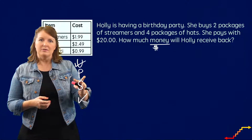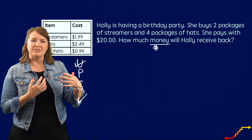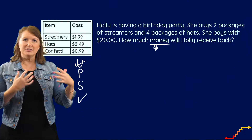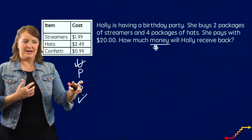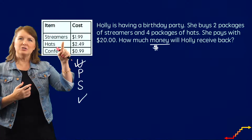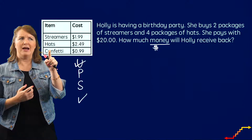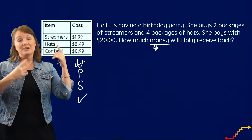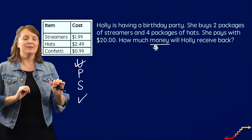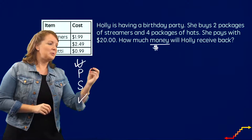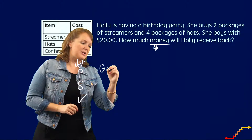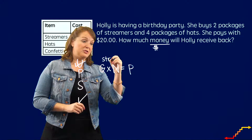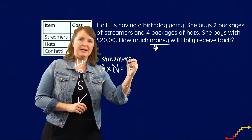Now I'm going to make a plan. A plan should always be based on the schema. Holly buys two packages of streamers and four packages of hats, so I'm going to use the equal groups schema — I'm going to use it twice to help figure out what's going on. My equal group schema is: groups times the number in each group equals the product. I'm going to do that first for the streamers, and if you want to label it just like this, that's great.